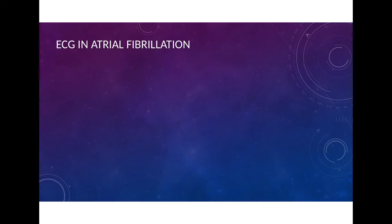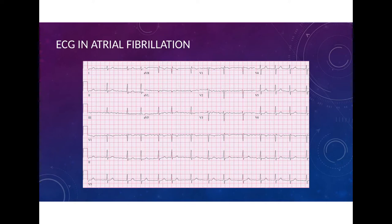Diagnosing atrial fibrillation using an ECG can be tricky. Here's an example where the patient actually has a normal heart rate — counting 13 QRS complexes across the strip gives approximately 78 beats per minute. I had to use that counting method because the RR intervals are very irregular — here's a short RR interval, here's a longer one — there's really no clear pattern to the RR intervals.